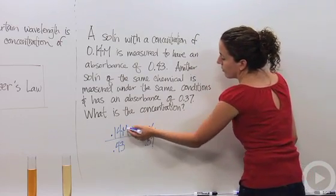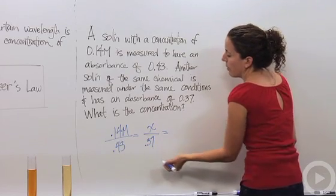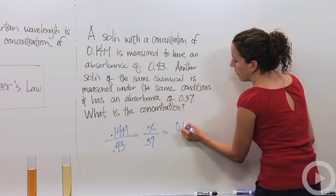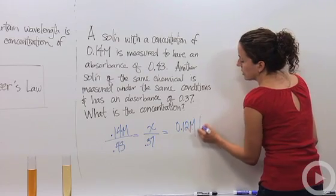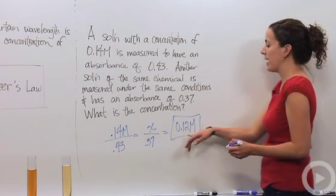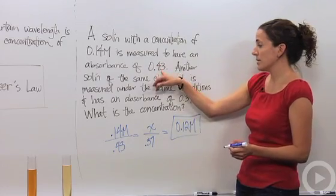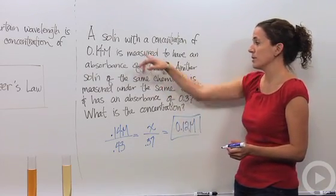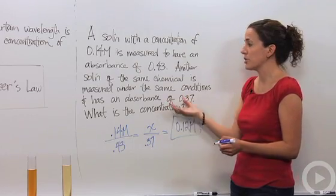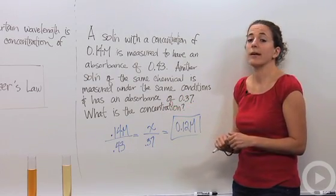And if you cross multiply 0.37 times 0.14 divided by 0.43, you're going to end up with 0.12 molar solution, which is exactly how we predicted. The absorbance is going down so the concentration is also going down. So this is a good example of Beer's Law in action.